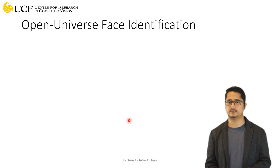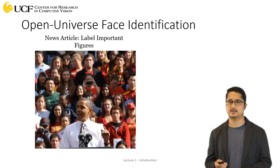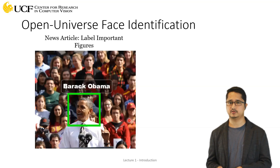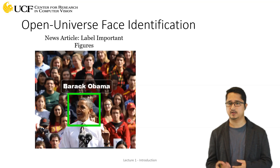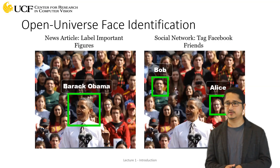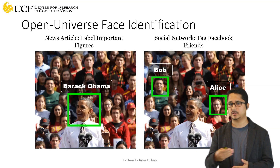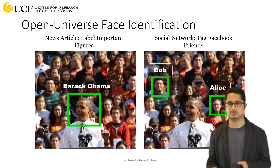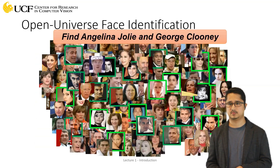There are different variations of face recognition. One is open-universe face identification — for example, if you have a lot of faces and want to detect or identify an unknown face among them. You might have seen this on Facebook or other social media platforms: if you have a group photograph, Facebook can automatically identify those faces if they are in your friend circle. This is just a variation of the same problem.